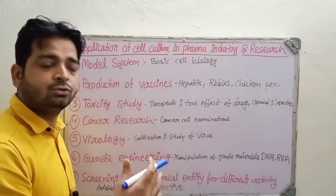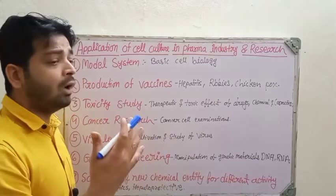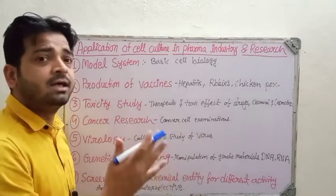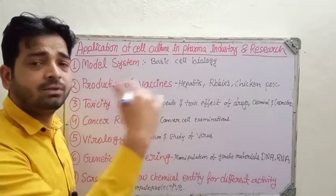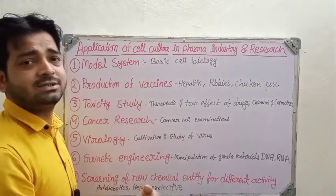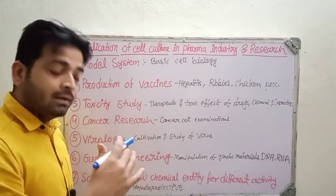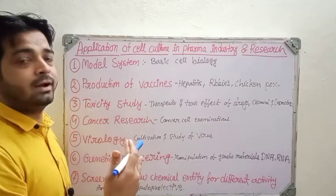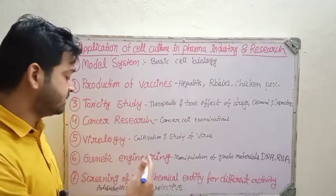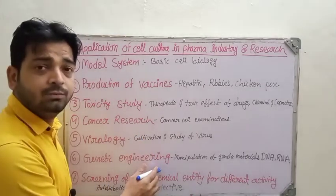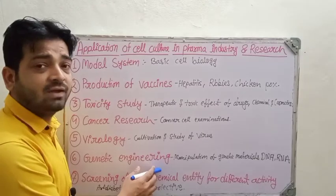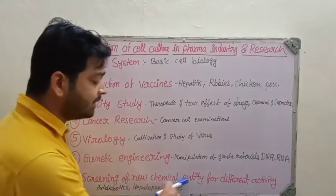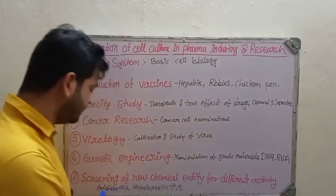Genetic engineering involves the manipulation of genetic material like DNA and RNA. This includes stem cell therapy and many other techniques to overcome autoimmune diseases or heritable diseases passed from parents to children to grandchildren. To break that sequence, we can use certain techniques, and these are made possible only with ex vivo cell cultures.